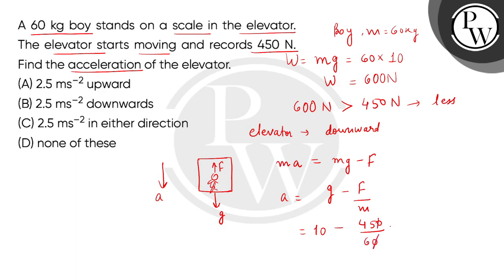This will cancel and this is 10 minus 7.5. It means we will get 2.5 meter per second square. And we have already decided that the elevator is moving in the downward direction. So the correct answer is option B. Thank you.